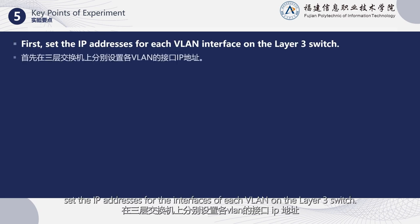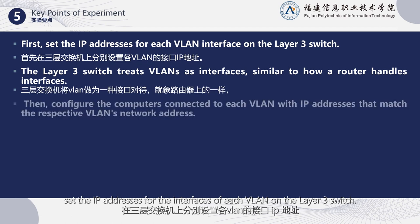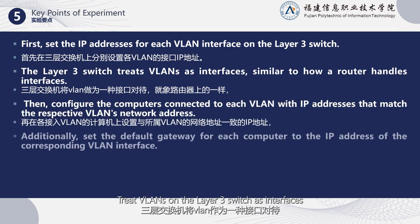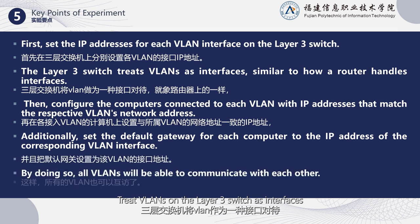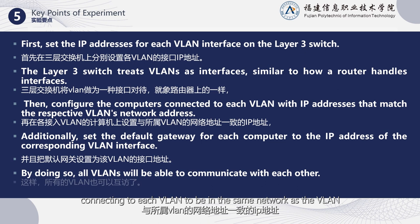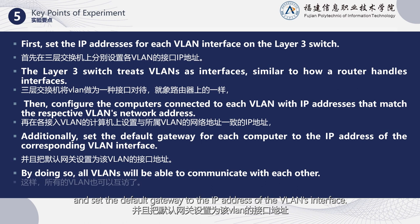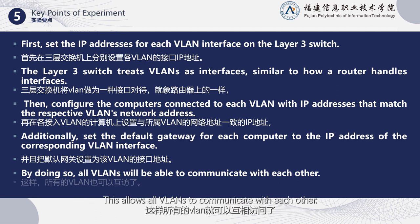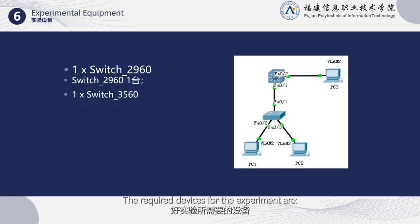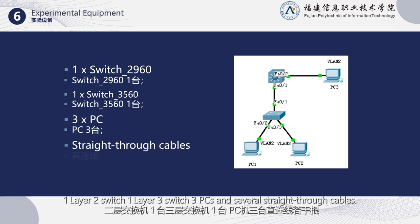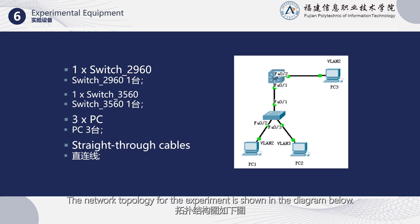The key points of the experiment are as follows. First, set the IP addresses for the interfaces of each VLAN on the Layer 3 switch. Treat VLANs on the Layer 3 switch's interfaces similar to a router. Set the IP addresses on the access switches connecting to each VLAN to be in the same network as the VLAN, and set the default gateway to the IP address of the VLAN's interface. This allows all VLANs to communicate with each other. The required devices are: one Layer 2 switch, one Layer 3 switch, three PCs, and several straight-through cables.